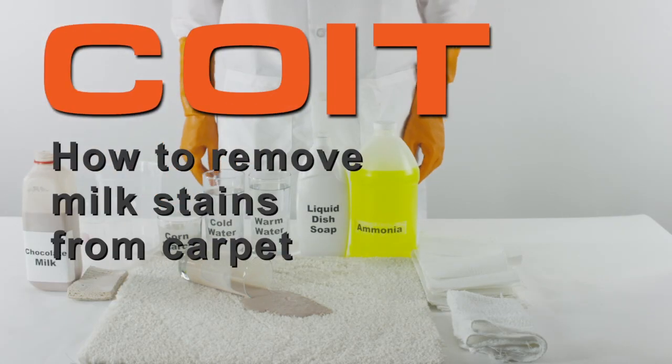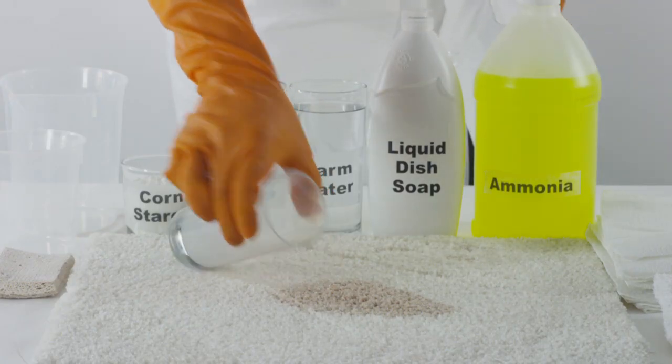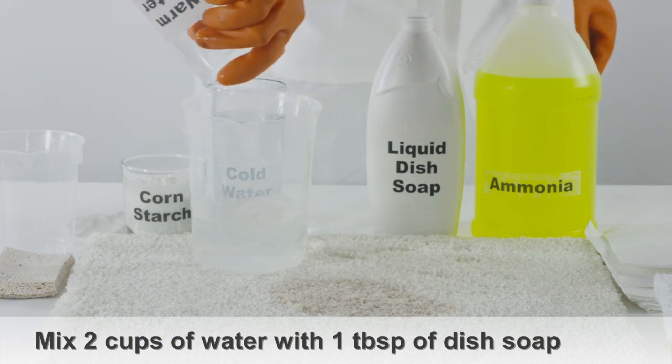How to clean milk out of carpet. Mix two cups of warm water with one tablespoon of liquid hand dishwashing detergent.